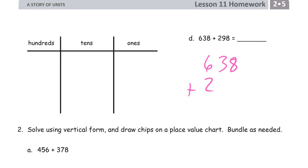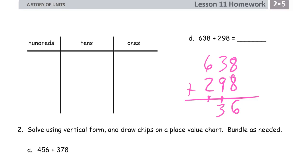638 plus 298. Add our ones digits first. 8 plus 8 is 16. Composing a 10. I can see I have a 9 here, so that 10 and that 9 makes another 10 — that's 10 tens. And three more is 13 tens. So I'm going to have to compose a hundred with three tens left behind. Our hundreds digits: 6 plus 2 is 8, and that one more hundred makes it 9 hundreds.